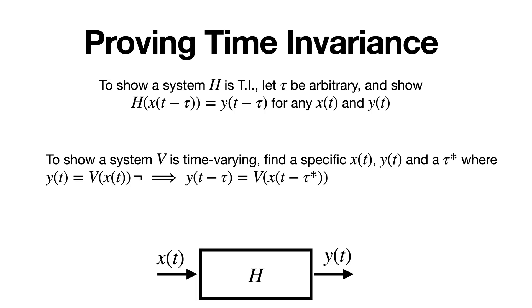To show that a system v is time varying, all you need to do is find a specific x, y, and t star where if you know that y of t equals v of x of t, then it's not the case that y of t minus tau equals v of x of t minus tau. So what you're doing is finding a specific counterexample or a specific time in which things were different. This is what we did for the Chick-fil-A example earlier where we had the isopennow function. We just provided two inputs, one that was shifted by a different amount, and then the answer wasn't shifted. The answer wasn't even a function of time, so that explains why we got different answers.